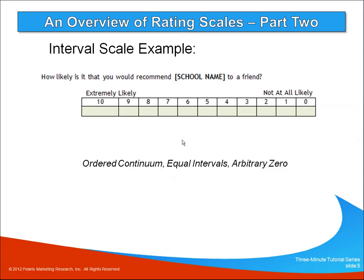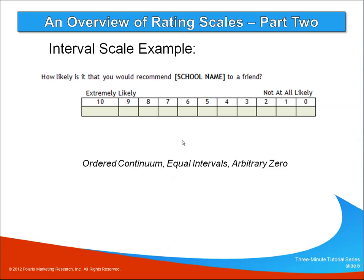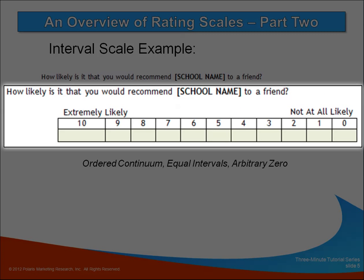Interval scale data presents measures on an ordered continuum that is in rank order. They have an arbitrary zero, but intervals between items are equal. In our interval scale example, we asked parents how likely they are to recommend the school to a friend using a scale of zero to ten, where zero is not at all likely and ten is extremely likely. All the rating points are unique, they're in rank order, they're equally spaced, and zero is arbitrarily set to mean not at all likely.